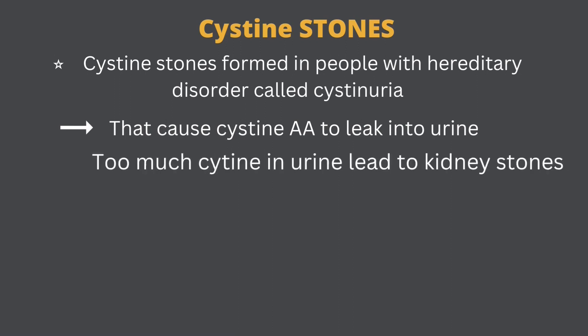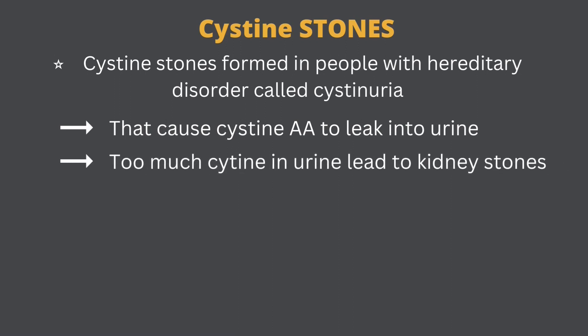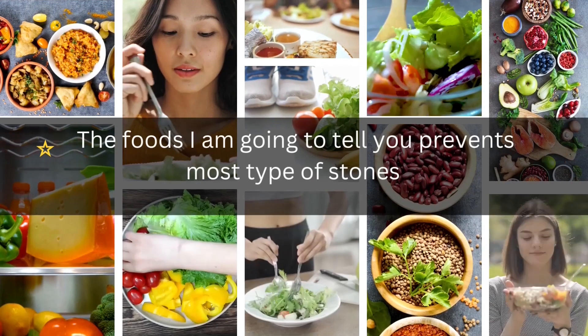Cystine stones form in people with a hereditary disorder called cystinuria, which causes the cystine amino acid to leak into the urine. When there is too much cystine in the urine, kidney stones are formed.